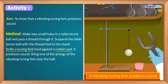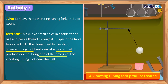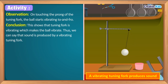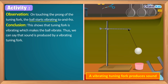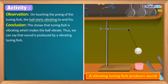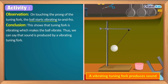After striking, the tuning fork produces sound. Now bring one of the prongs of the tuning fork near the table tennis ball. You will observe that on touching the prong of the tuning fork, the ball starts vibrating to and fro. This shows that the tuning fork is vibrating, and due to its vibrations the ball also starts vibrating. We conclude that a vibrating tuning fork produces sound.